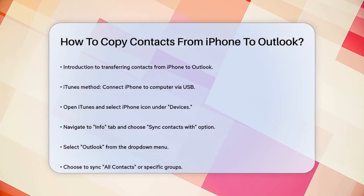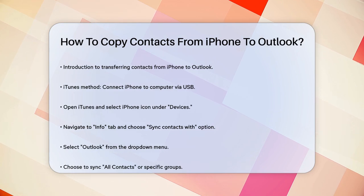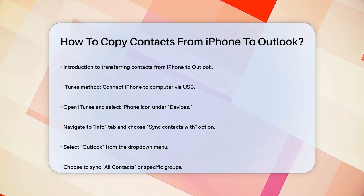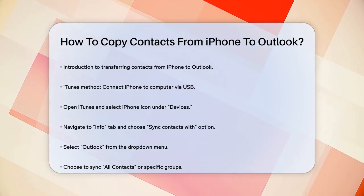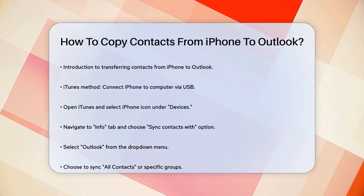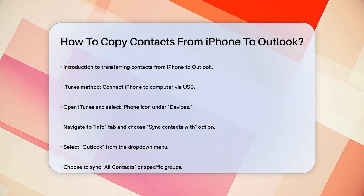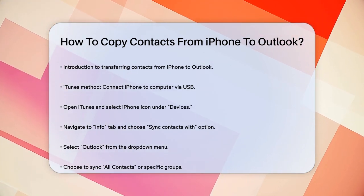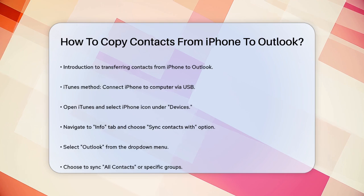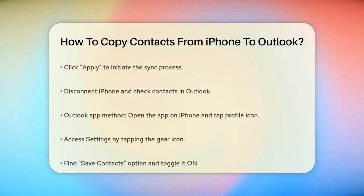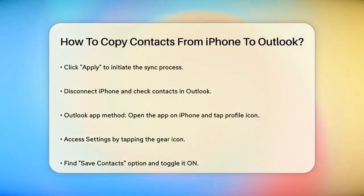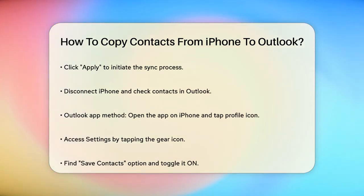Here, you'll see an option to sync contacts with. Select Outlook from the drop-down list. You can choose to sync all contacts or select specific groups by clicking Selected Groups and checking the contacts you want to transfer. Click Apply to start the sync process, then disconnect your iPhone and close iTunes.